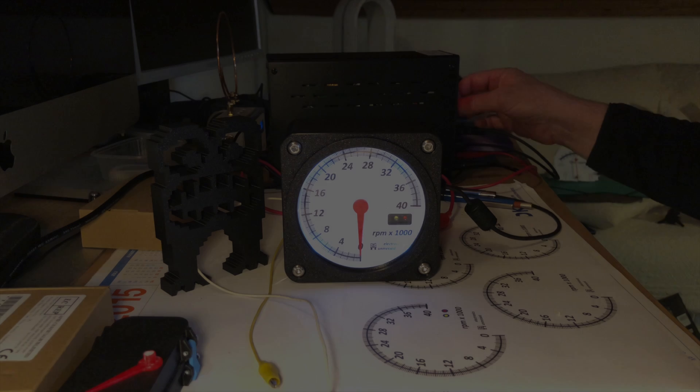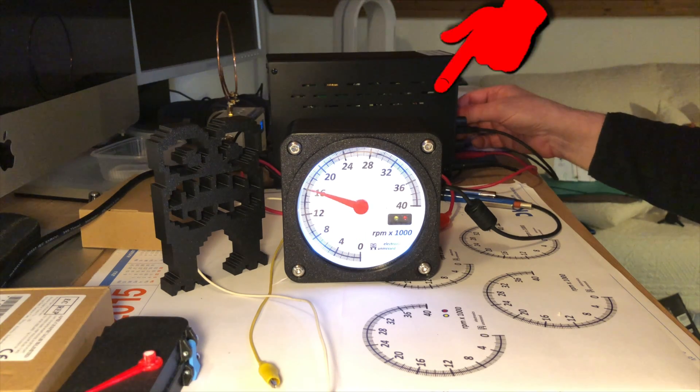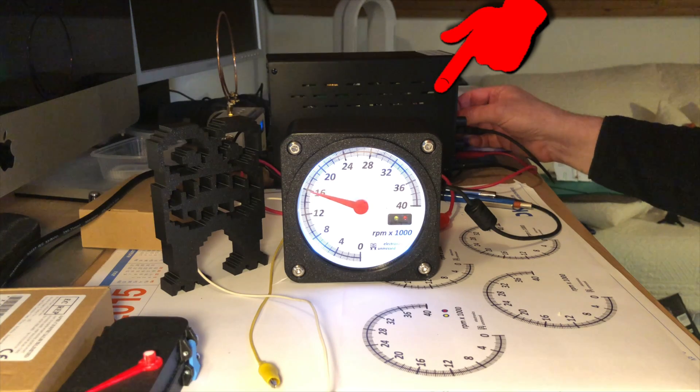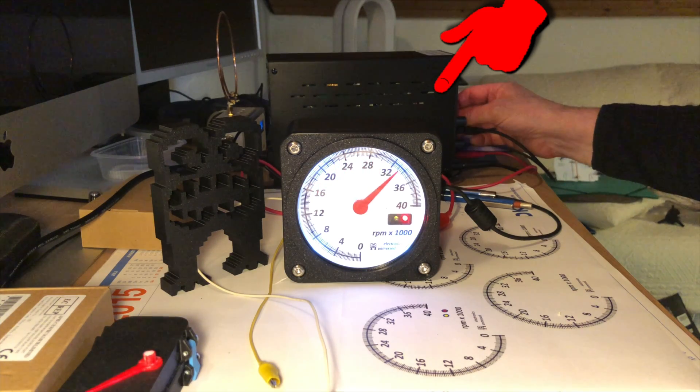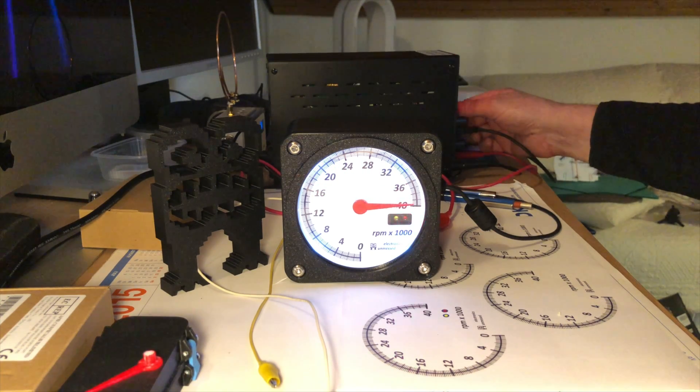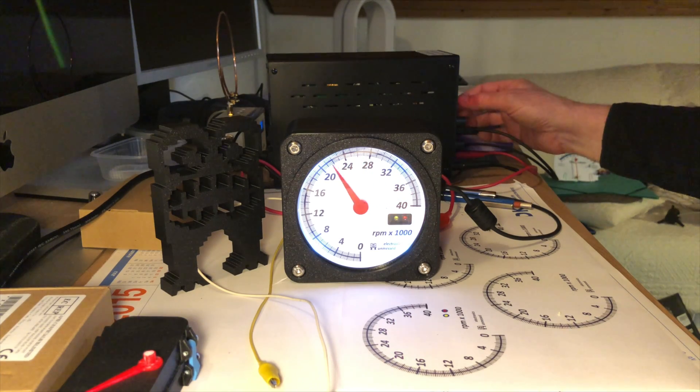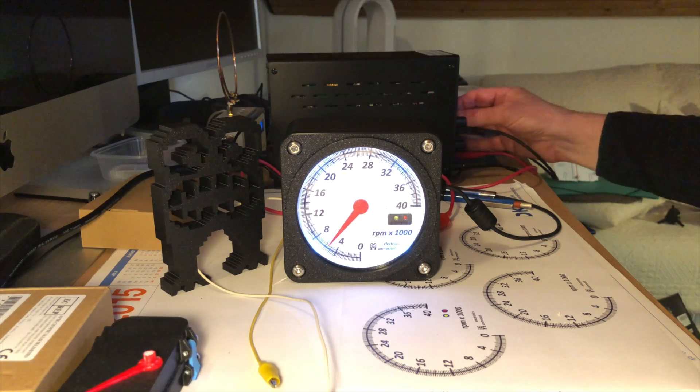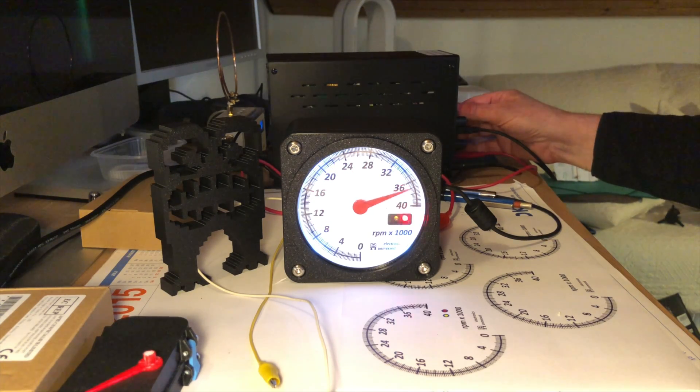My voltage source is a lab power supply with current limitation. In this way I simulate the power supply of a slot car racetrack which has also a simple current limitation due to its internal resistance to avoid damage from a short. I can change the voltage via the voltage regulator or switch it on and off by simply interrupting the power.